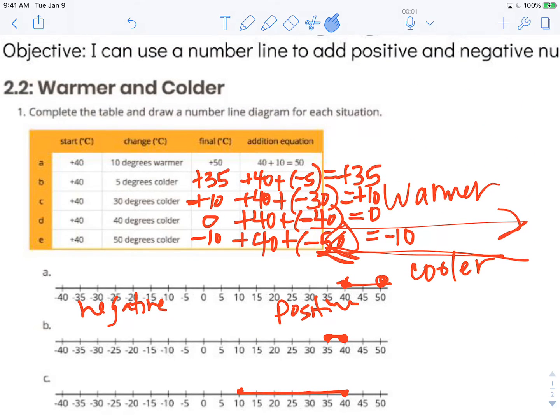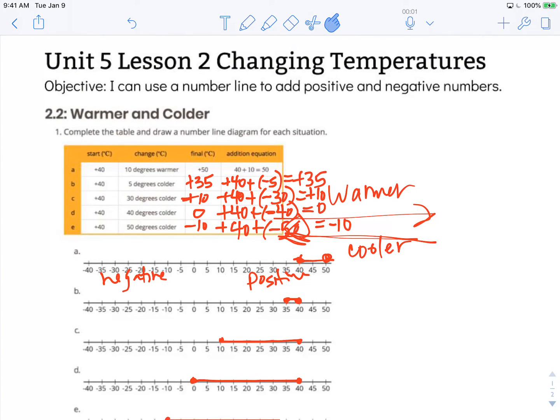Our objective was that I can use a number line to add positive and negative numbers. So you can see using that number line helps me visualize what it is that I'm doing and why I write the numbers that I do whenever I have positive and negative numbers being added together. Thanks for watching!